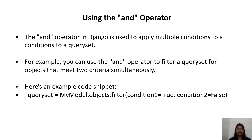Using the AND operator: The AND operator in Django is used to apply multiple conditions to a query set. For example, you can use the AND operator to filter a query set for objects that meet two criteria simultaneously. Here is an example snippet: query_set = MyModel.objects.filter(condition1=True, condition2=False).